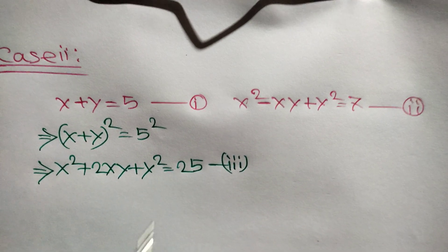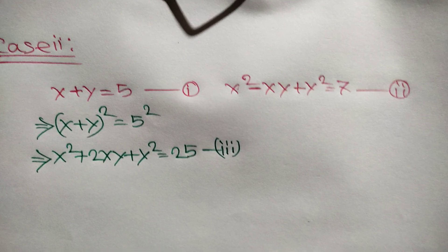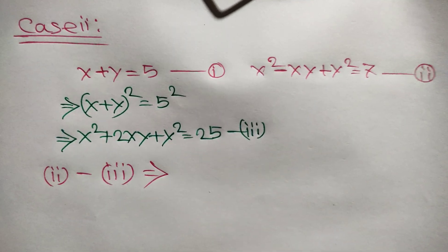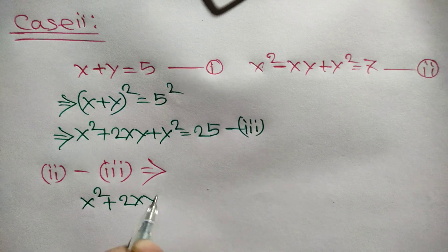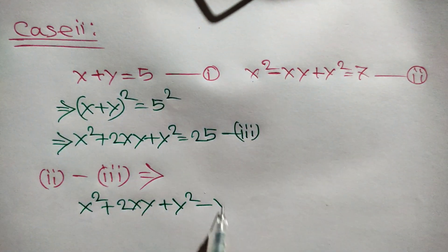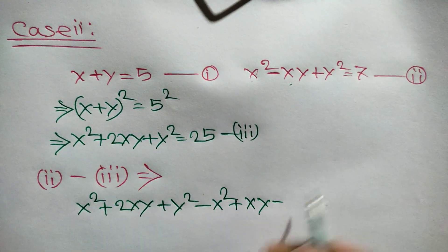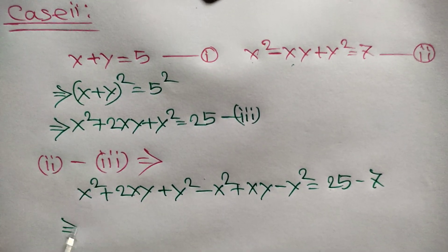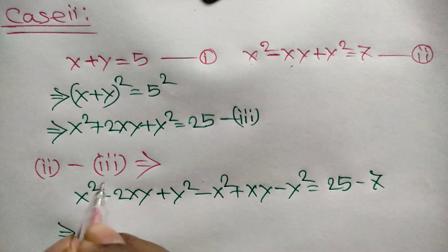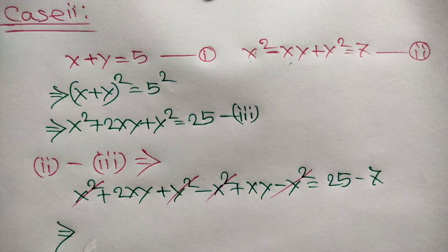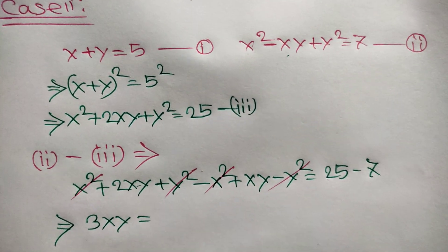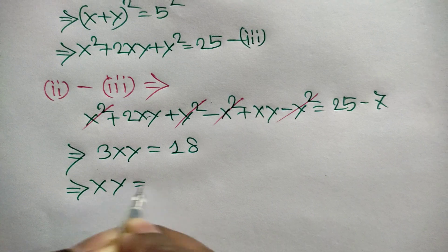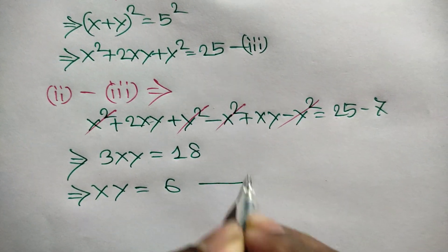Now subtract equation 2 from equation 3. We get x squared plus 2xy plus y squared minus x squared plus xy minus y squared is equal to 25 minus 7. The x squared and y squared cancel out, giving 2xy plus xy, which is 3xy, equal to 18. Dividing both sides by 3, we get xy is equal to 6 — equation 4.